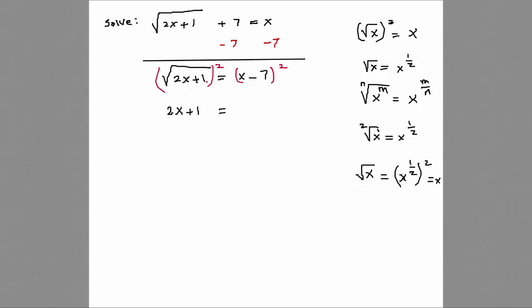So can somebody tell me what do I get on the right-hand side? I have a minus b squared, x squared minus 2 times that is 14x, plus 49.